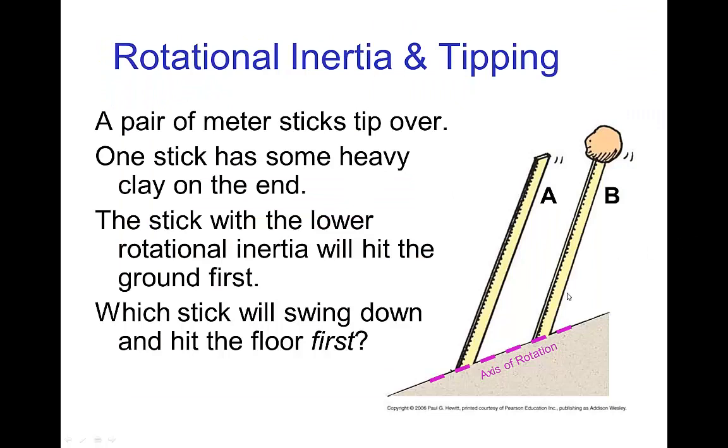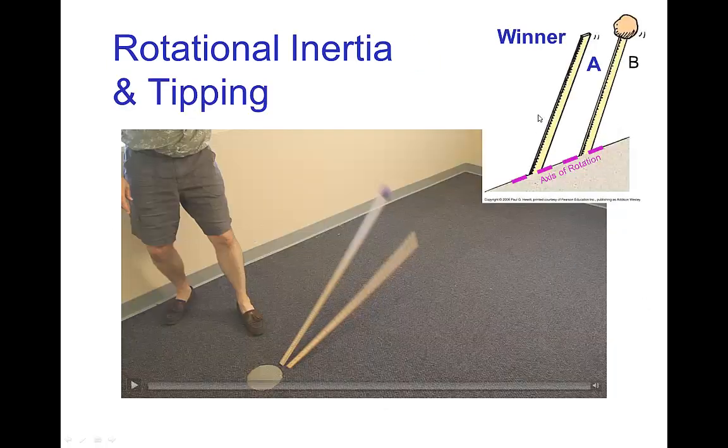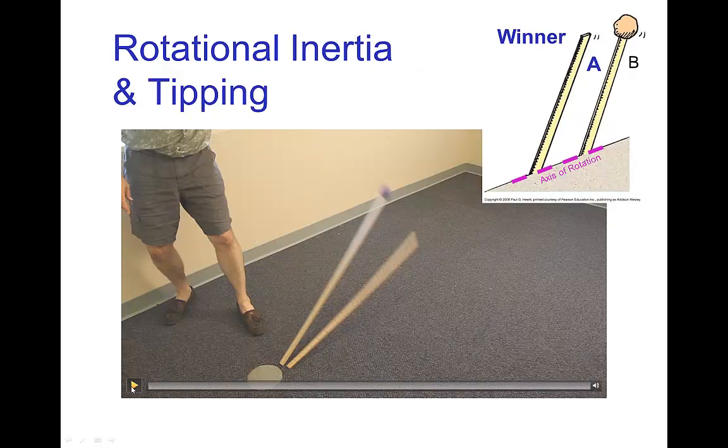Another similar effect if I have a pair of sticks and I'm going to have them tip over. The two sticks are similar, but the second one I've put a big lump of clay on the end. When they swing down, which one is going to hit the ground first or will it be a tie? I can tell you the one with the lower rotational inertia will hit the ground first, and that would be the stick that does not have weight on the end.